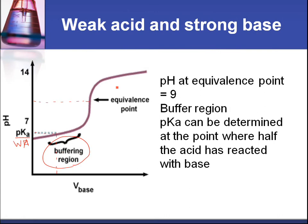So some points to note, the pH at equivalence point is around nine. There's a buffer region, which we just looked at, and the pKa can be determined at the point where half the acid has reacted with base. So at this point, we have equal quantities of weak acid and the salt, which makes the buffer solution.